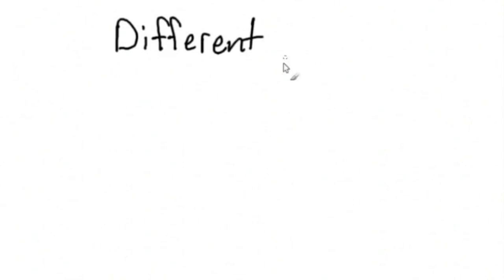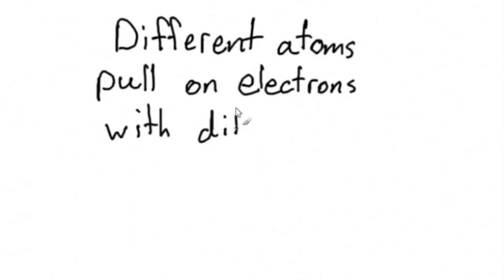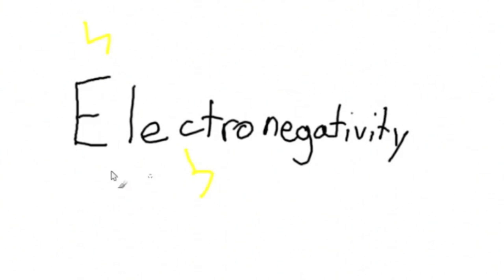The dipole comes from the different elements in the molecule pulling on electrons with different strengths, making a positive and negative area within that molecule. This pull is known as electronegativity, which is one of the most important forces in chemistry.